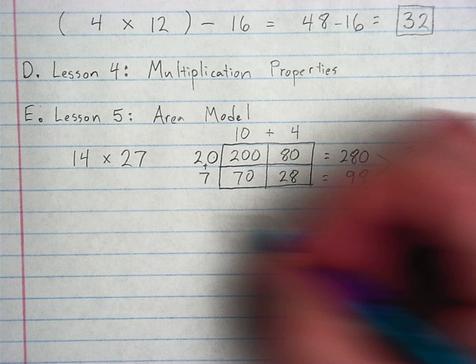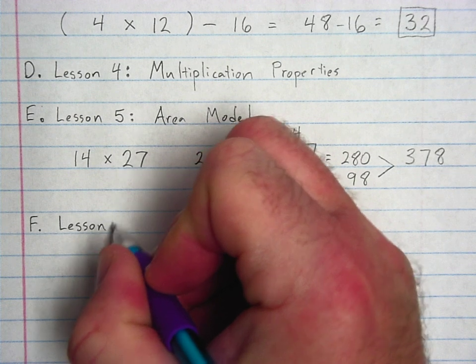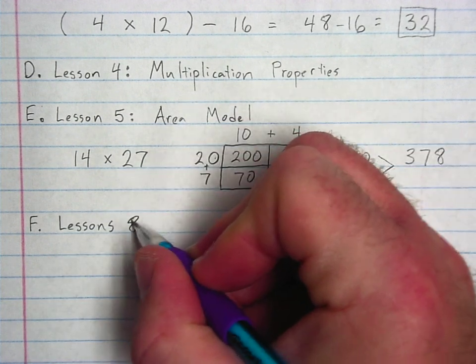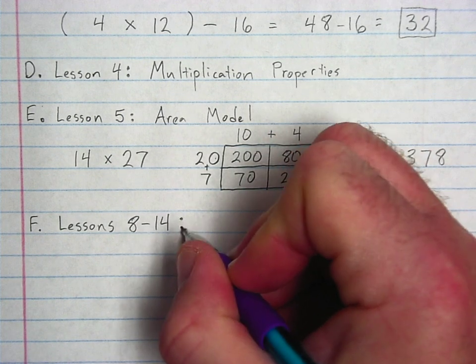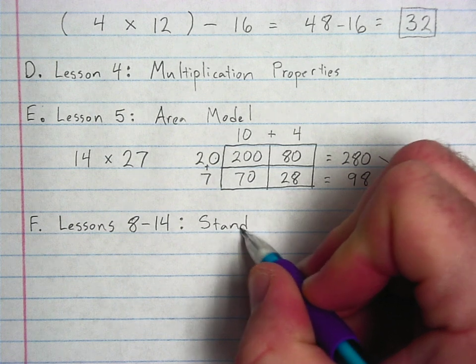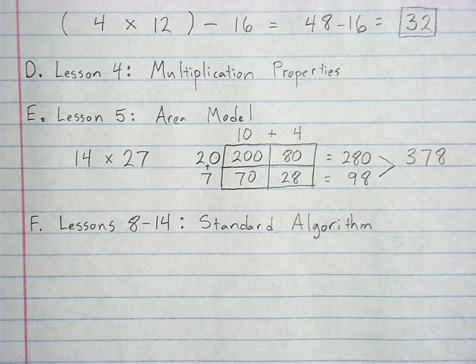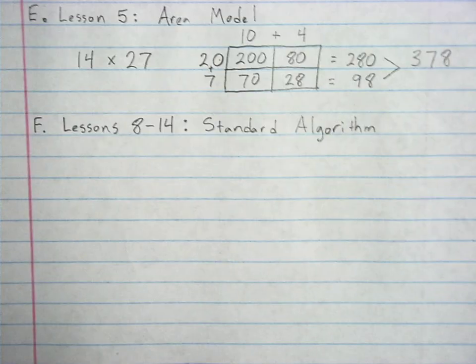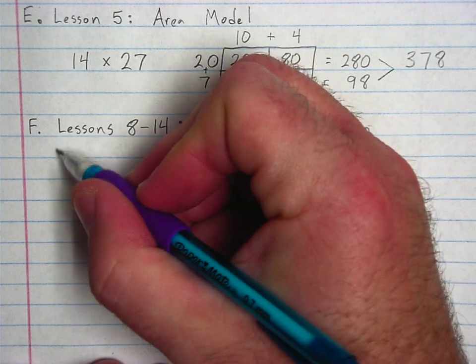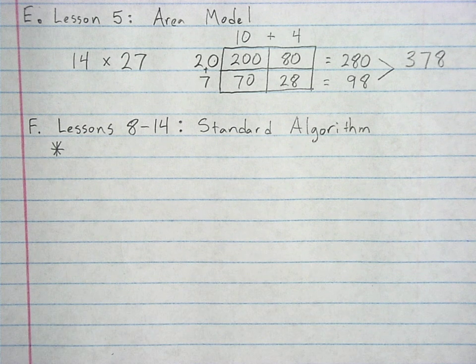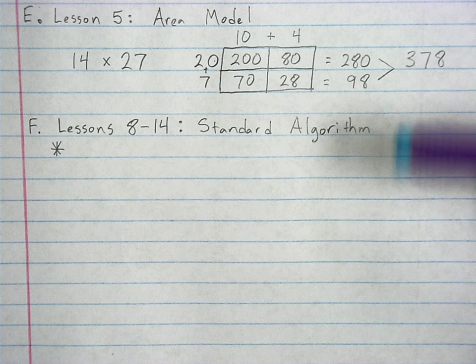Now we're going to do a little bit of a cheat with the next one. We are going to combine lessons 8 basically 8 through 14. Because at this point we started using the standard algorithm, and this is where I'm going to stop for today. I'm going to give you a couple practice problems using the standard algorithm. The big thing I want you to remember with the standard algorithm, this is the vertical multiplication. I keep saying this if you're not sure what I'm talking about I'll show you in a minute. This is the vertical where you write it up and down.